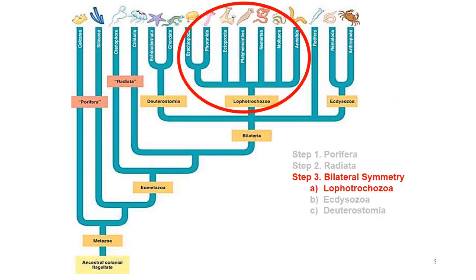Now that we have finished clade Radiata — organisms that, no matter which way you cross-section them, you get an equal right and left half; these are column-shaped organisms — we're going to move on to clade Bilateria. In clade Bilateria, you can only slice the organism one way to get an equal right and left half. There are three main groups in this clade. We will start with the Lophotrochozoans, the most basal group, then move on to the Ecdysozoans, and finally finish with the group Deuterostomia, the most evolutionarily advanced of the three.